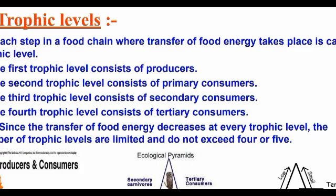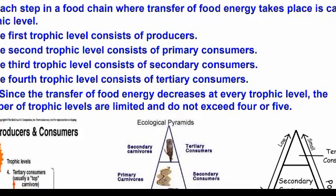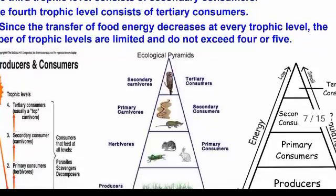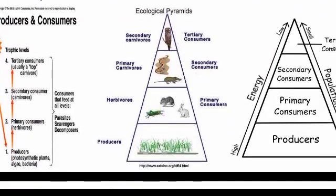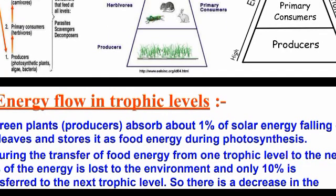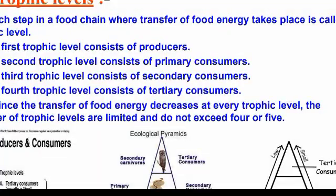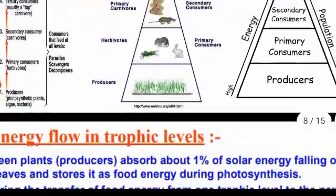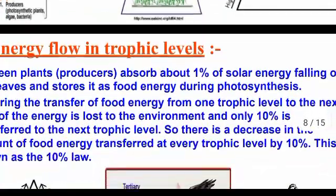Trophic levels are: producer, primary consumer, secondary consumer, and tertiary consumer. Secondary and tertiary consumers are carnivores.